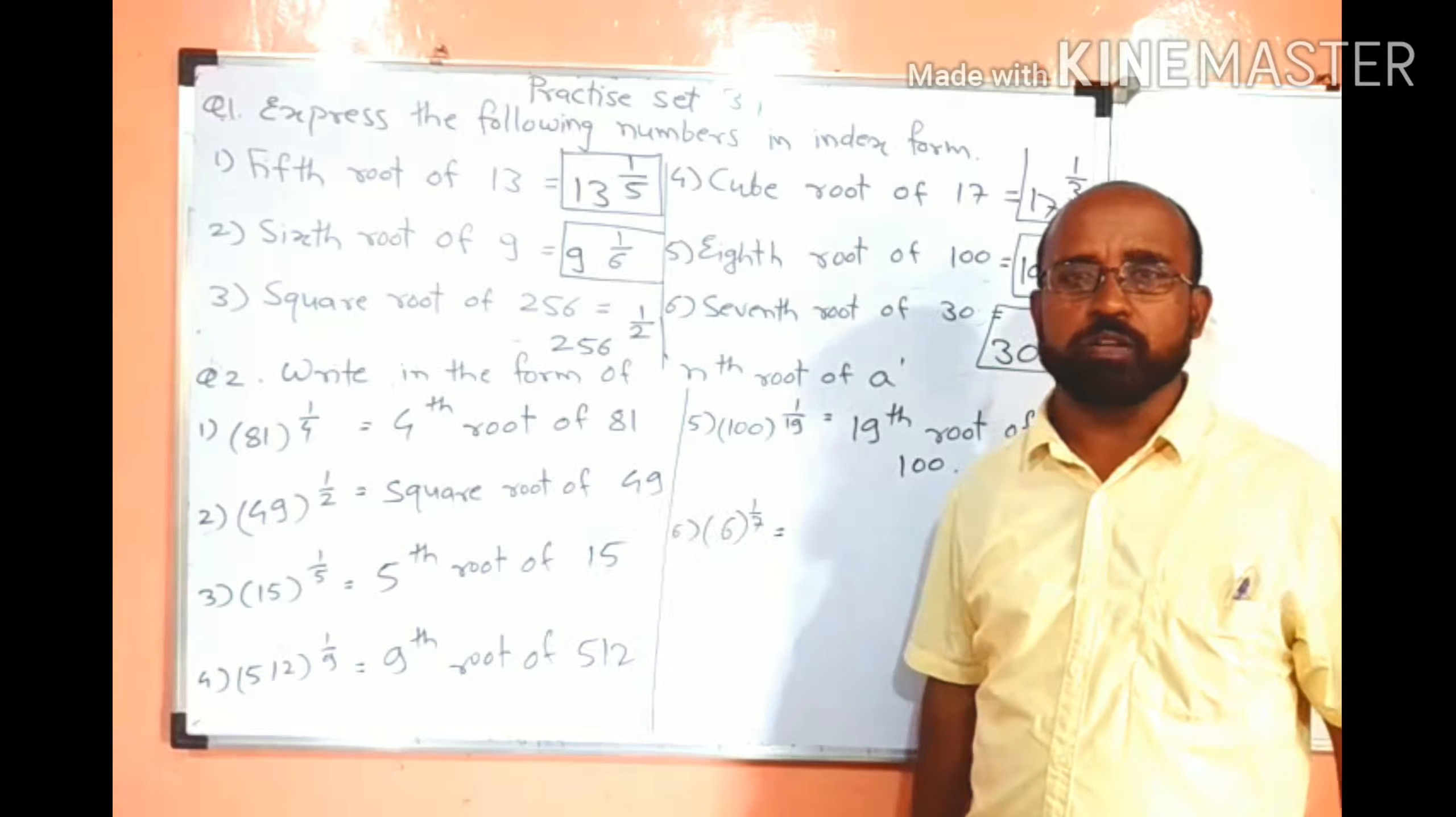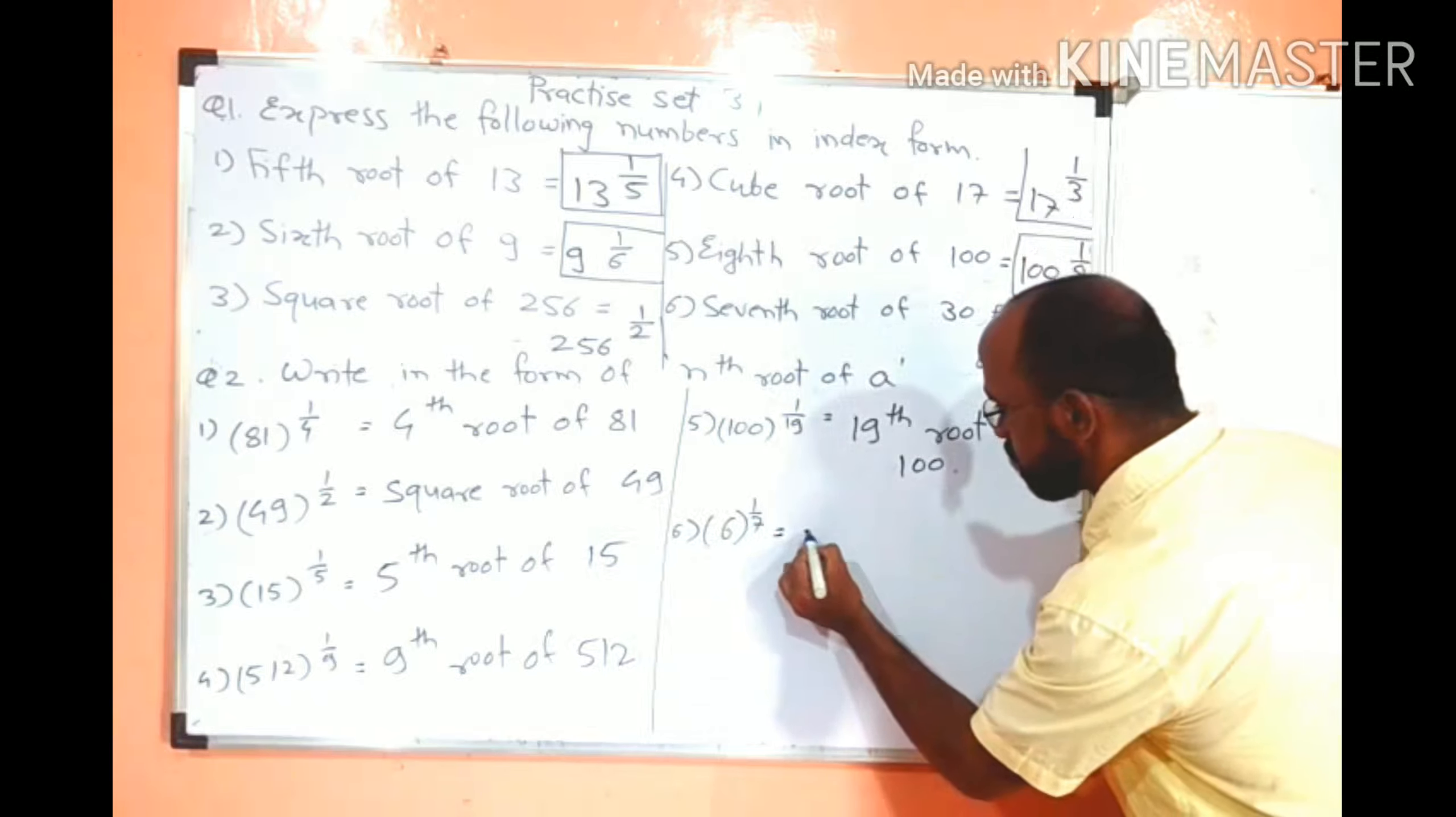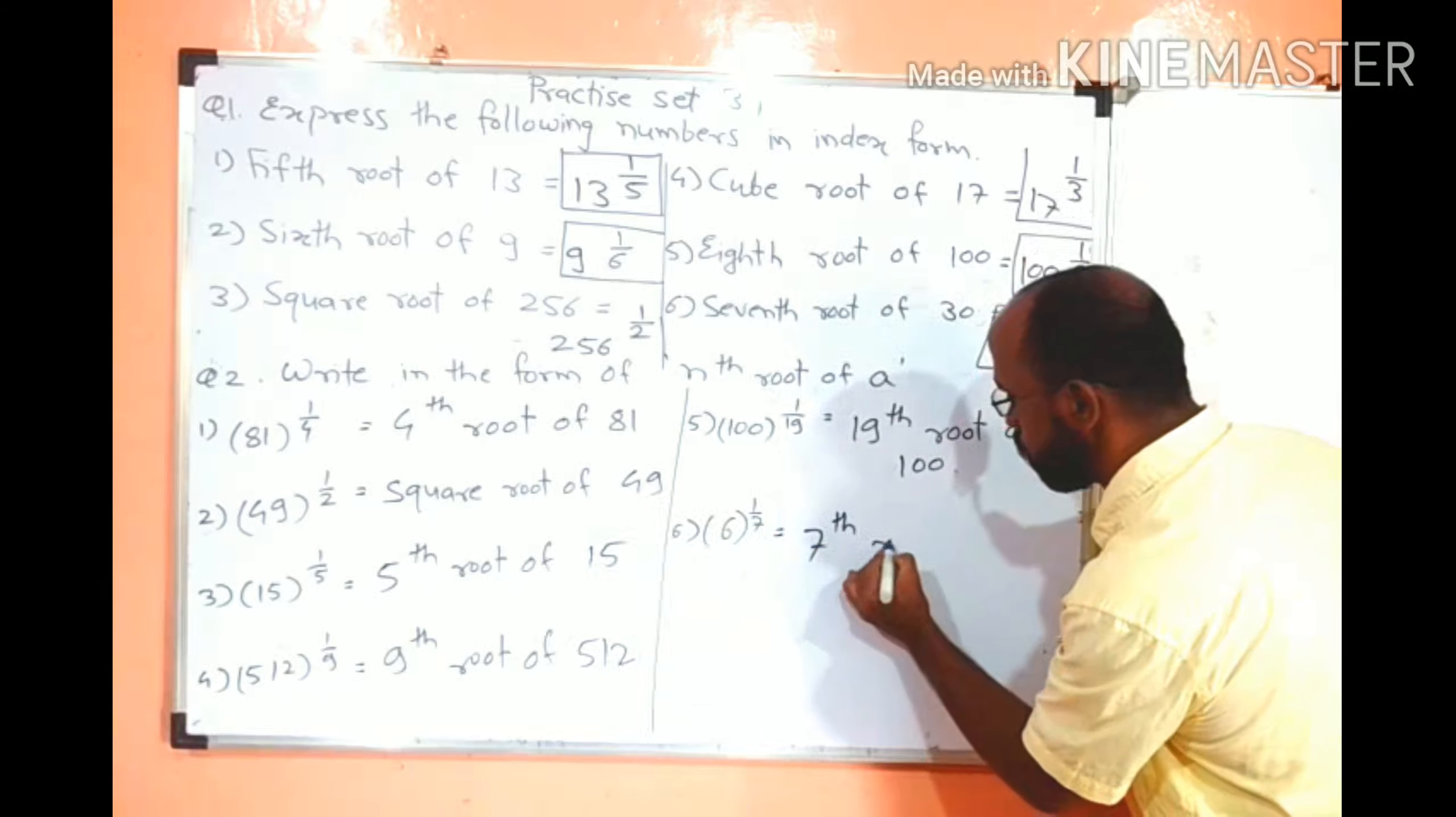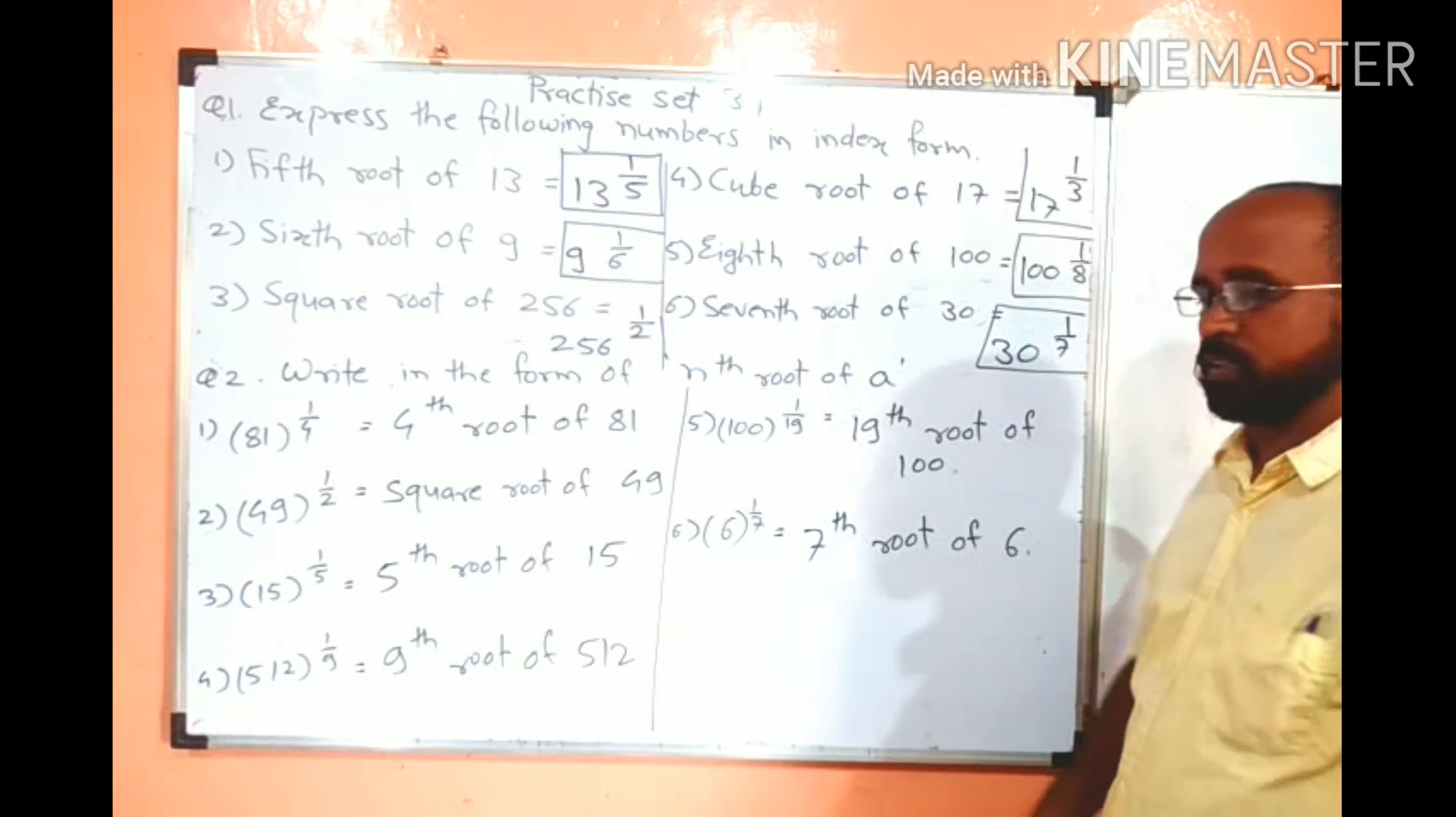And the last one is 6 raised to 1 upon 7. Root is 7, base is 6. So we will write seventh root of 6. Clear friends?